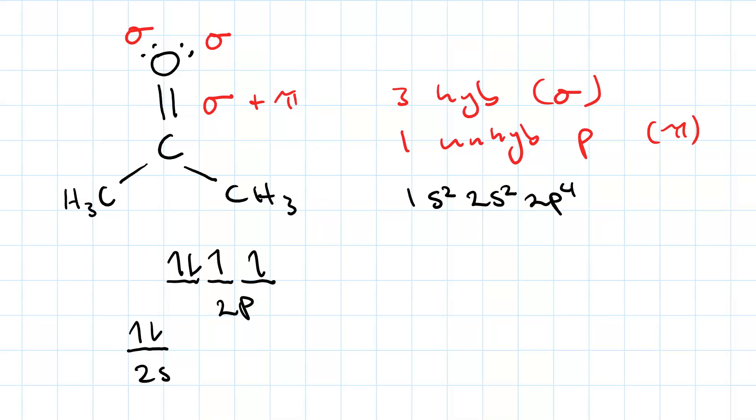Okay, so, we need three hybrids, which means we're going to hybridize the s and two of the p's to get three sp2 hybrid orbitals. And we leave one of the p's alone. And now we put in our electrons. 1, 2, 3, 4, 5, 6.